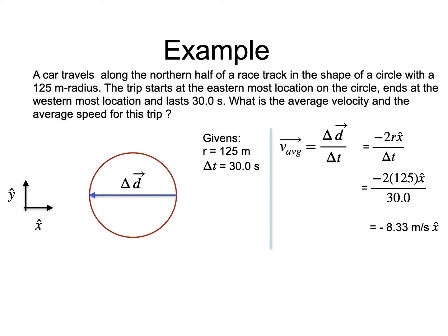As for the average speed, the ratio involves the distance travel and the duration. The car follows the half circle, so the distance traveled is half the circumference of the circle. Substituting the givens and using the calculator leads to 13.1 meters per second.